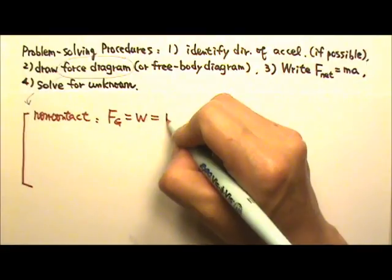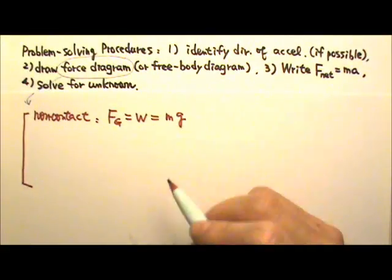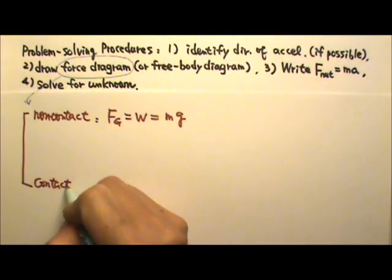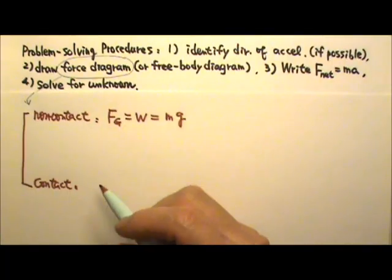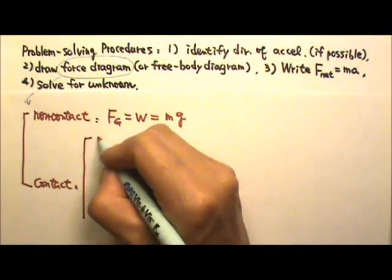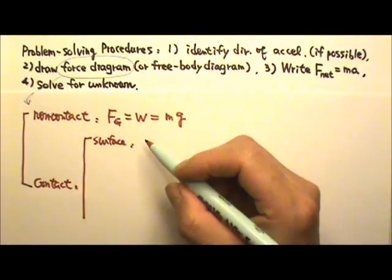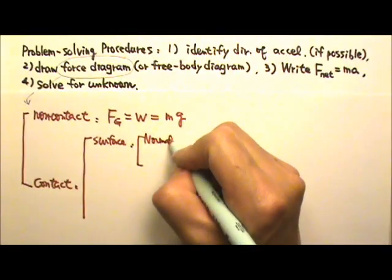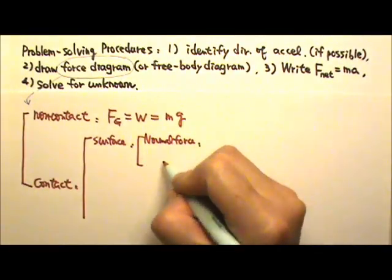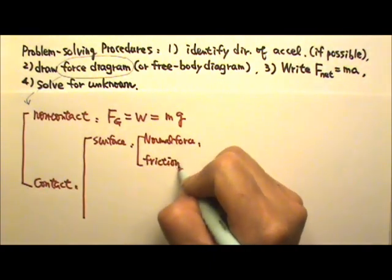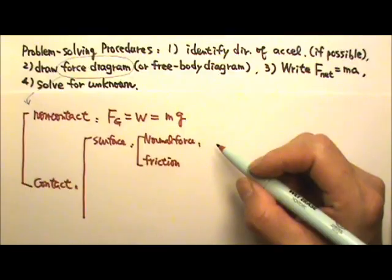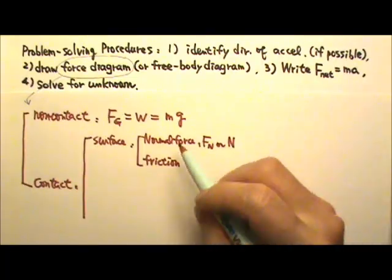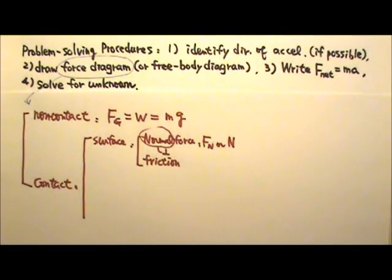The weight equals mg — mass times the gravitational acceleration. For forces that require contact, we can have a contact surface. A contact surface can give us two forces: normal force and friction. For normal force, we write F-sub-N or capital N. Normal in physics terms means perpendicular.